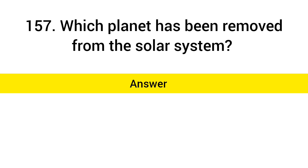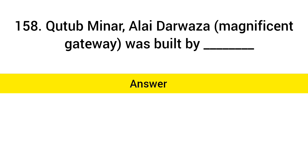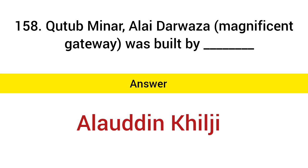Which planet has been removed from the solar system? Answer: Pluto. Qutub Minar's Alai Darwaza magnificent gateway was built by? Answer: Alauddin Khilji.